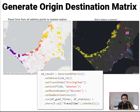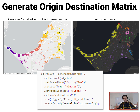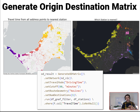Origin-destination analysis is very powerful but renowned for requiring a lot of compute. It can be used for supermarkets understanding how far customers are traveling to their shops, balancing out the ambulance network to ensure optimal coverage of the population, or — as it was during COVID — to understand where to put vaccination centers and test clinics.